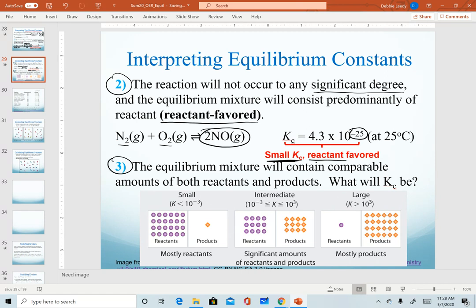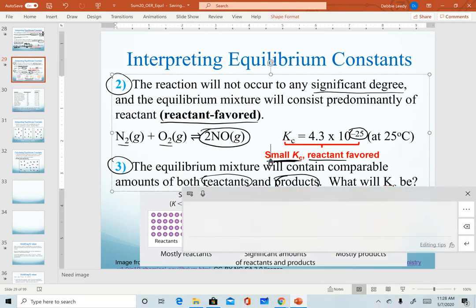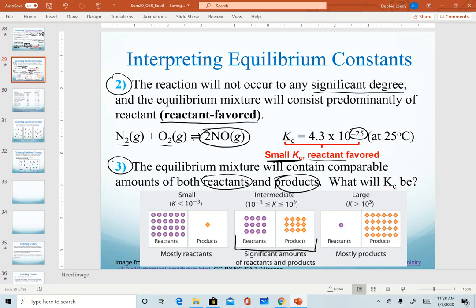Our third scenario for a value of Kc would be if we had appreciable amounts of both reactants and products. So like this middle image here, where we have an intermediate between a small and a large K. Realize that because we're in between the small and the large, we call this intermediate, if there's really no other definition to apply to it.